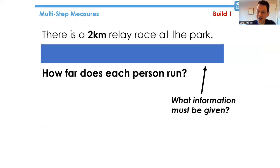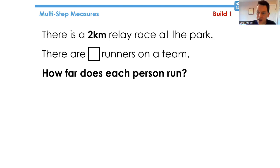From the multi-step measures task family, we have a slow reveal prompt, where children first of all have to identify the missing information, and only then they're given the opportunity to calculate the answer to the question — a common technique.